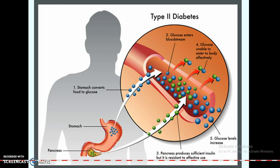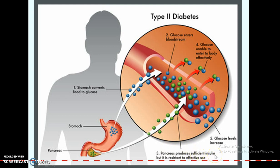Let's begin with type 2 diabetes and how it occurs. Usually in the stomach, food gets converted into glucose, which is present in the bloodstream. When glucose is elevated, insulin from the pancreas facilitates its absorption by different organs. But in type 2 diabetes, the pancreas produces an insufficient amount of insulin, or there is insulin resistance, and that is why glucose is unable to enter the body effectively, leading to increased glucose levels in the bloodstream.